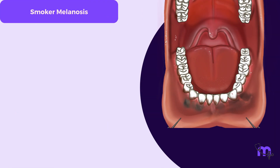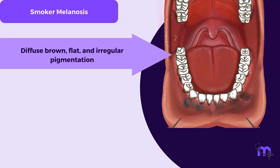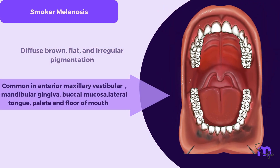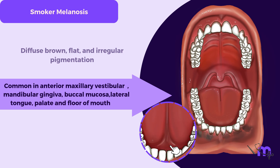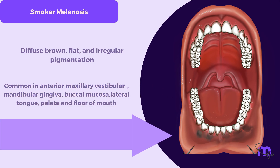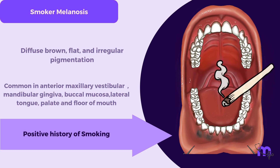Next is smoker's melanosis, which unlike malignant melanoma, always presents as a diffuse brown, flat and irregular pigmentation resembling a map. It commonly appears in the anterior vestibular maxillary and mandibular gingiva, buccal mucosa, lateral tongue, palate, and floor of the mouth. The patient has a positive history of smoking.